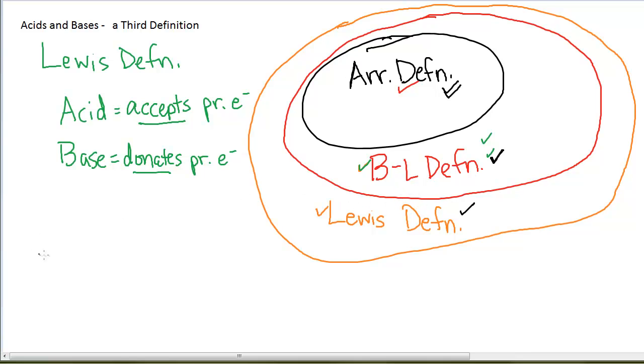But your book does have some examples of these. What we generally use the Lewis definition for is for acids and bases that cannot necessarily be defined by the Arrhenius definition or the Bronsted-Lowry definition. And the famous example that all textbooks have is the reaction between ammonia and BF3.